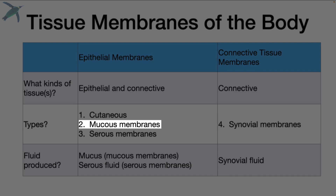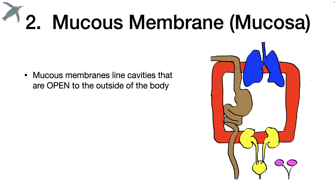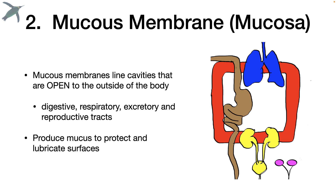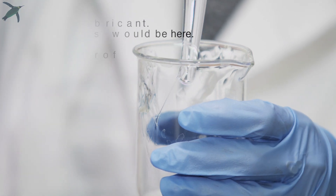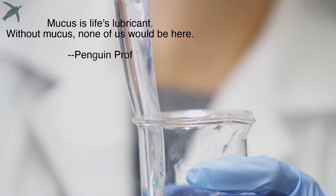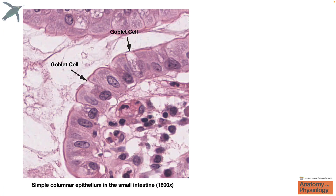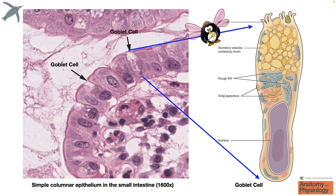Next we have mucous membranes. Mucous membranes line cavities that are open to the outside of the body — we're talking digestive, respiratory, excretory, and the reproductive tract. As the name implies, they produce mucus to protect and lubricate surfaces. You should really stop and think about mucus. Mucus is life's lubricant, and without it, none of us would be here. Here's an example of a mucus membrane — you can see the goblet cell that produces the mucus in this simple columnar epithelia lining the small intestine.